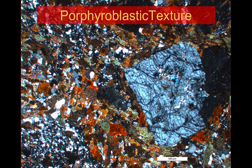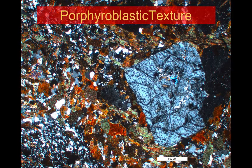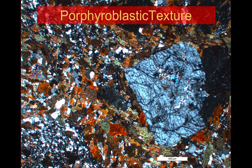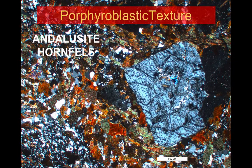Sometimes heat will create new minerals within the rock. As solid-state recrystallization goes on during metamorphism, new minerals will start to grow. This creates a texture we call porphyroblastic — the metamorphic equivalent of a porphyritic texture. In this case we've got a hornfels, but this large distinctive square crystal is andalusite, making this rock an andalusite hornfels. It's formed by contact metamorphism; you can see there isn't a foliation, but we do see the growth of this new mineral because of the heat applied to the rock.